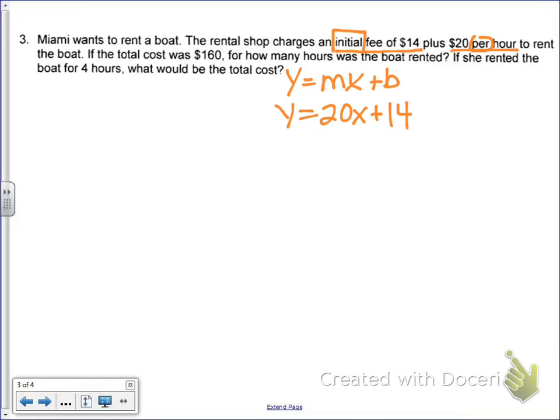All right, so that's my starting information. Now let's go to my first question. My first question tells me if the total cost was $160. And remember, money is y because on my slope, y always goes on top. And on my rates, money always goes on top. So let's go ahead and put our money in for y. So $160.